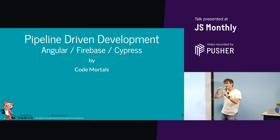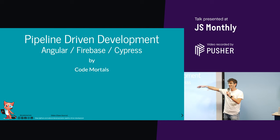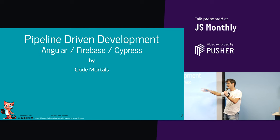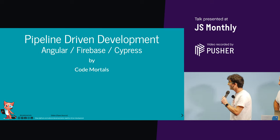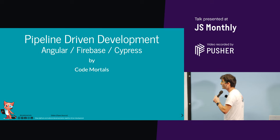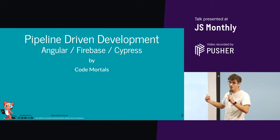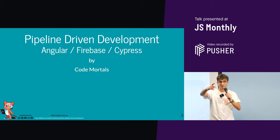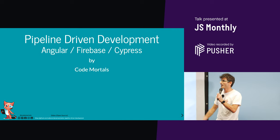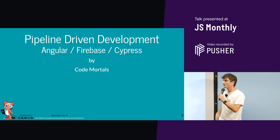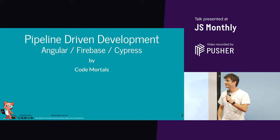By pipeline, we mean the full path to deployment, all the way from beginning to end. We're going to use CircleCI as an example for this as well. We're from the CodeMortals team; we're live streaming here tonight, so support us by subscribing to our YouTube channel.